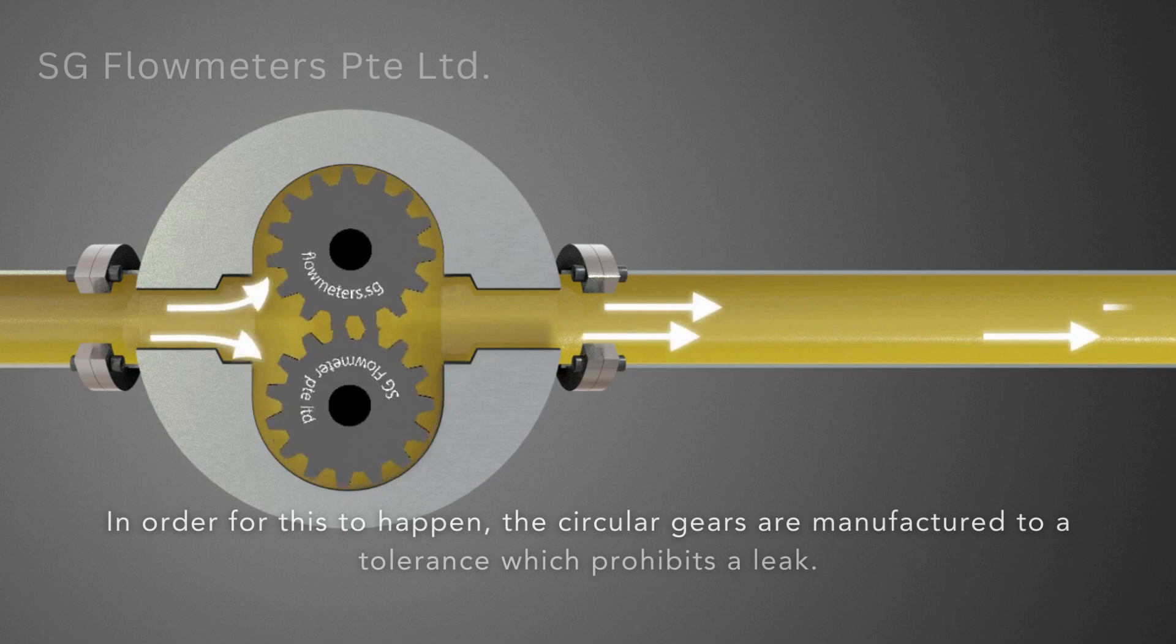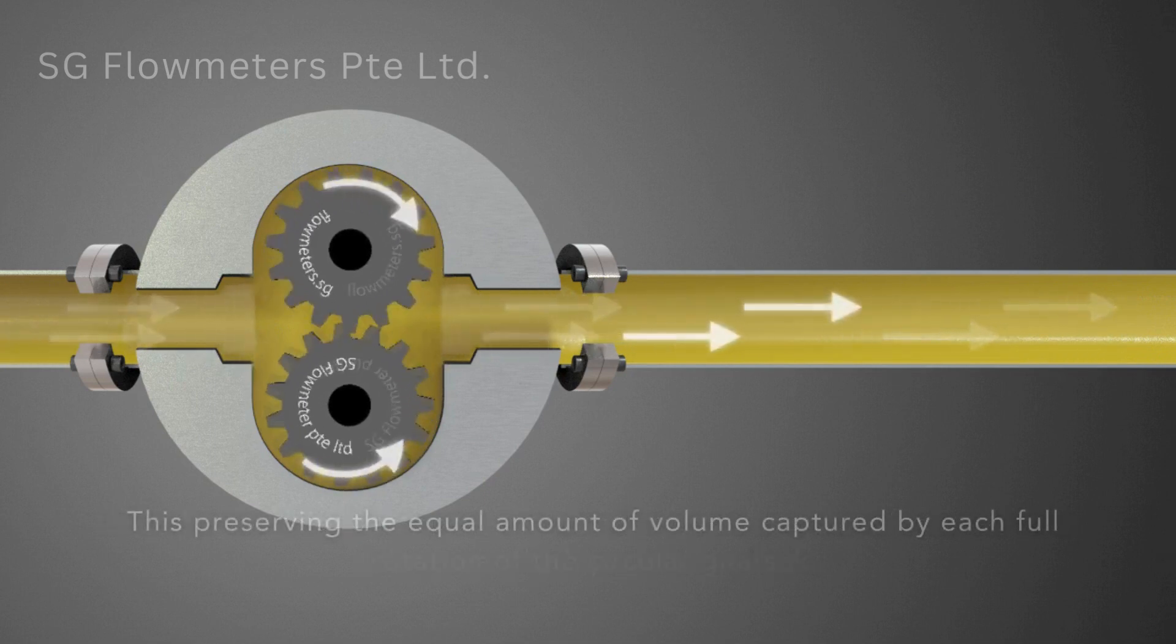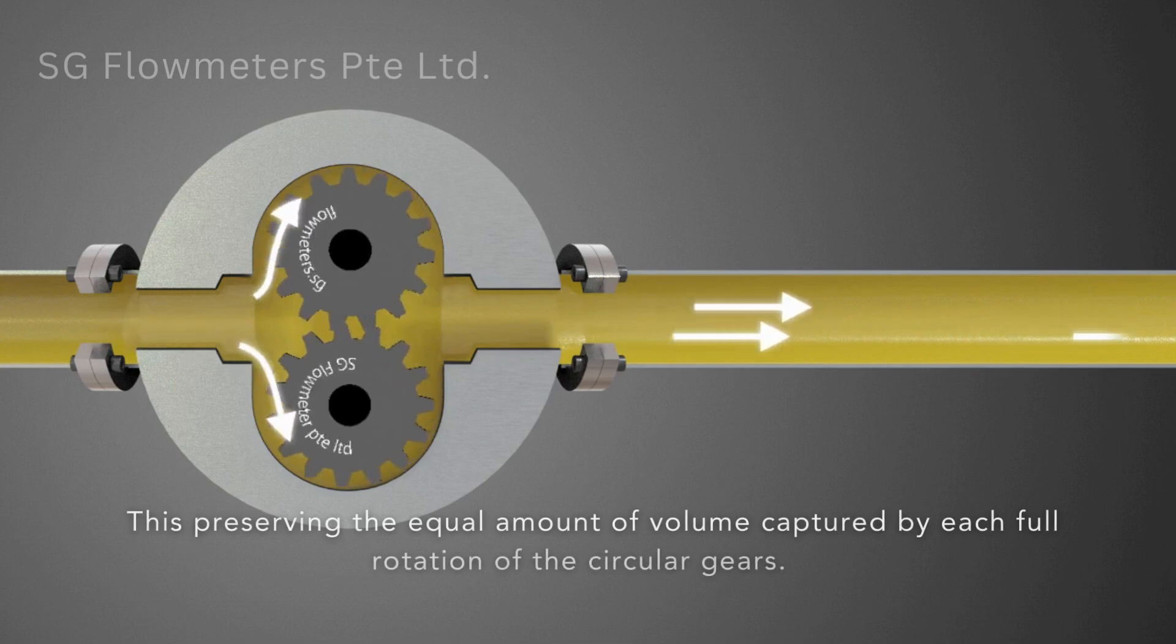In order for this to happen, the circular gears are manufactured to a tolerance which prohibits a leak, thus preserving the equal amount of volume captured by each full rotation of the circular gears.